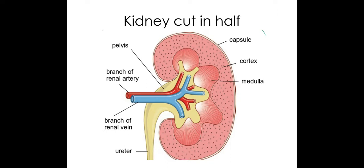If you did cut a kidney in half, this is what you should see. In an exam, the capsule isn't usually labelled, so I would make sure that you've labelled primarily the cortex and the medulla first of all, and if there is another label on the outside then put the capsule — but it's not always on your exam. You also have a paler bit towards the inside which is the pelvis.